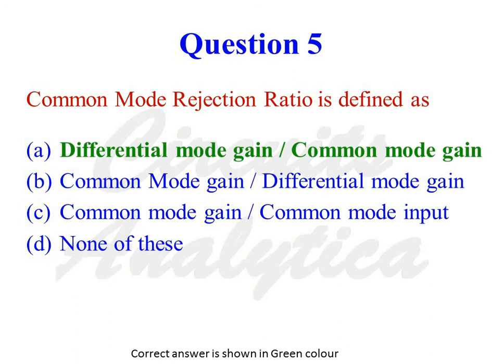Common mode rejection ratio is defined as — the options are: differential mode gain divided by common mode gain; common mode gain divided by differential mode gain; common mode gain divided by common mode input; or none of these. The correct answer is differential mode gain divided by common mode gain. For an operational amplifier, ideally, CMRR is equal to infinity, and it is defined as the ratio of differential mode gain to common mode gain.